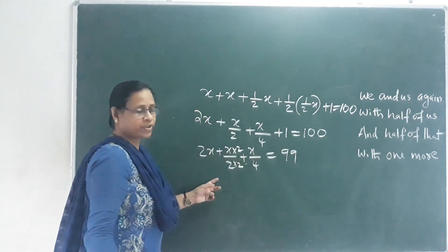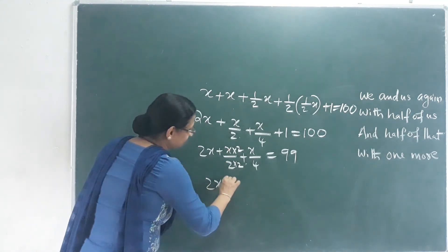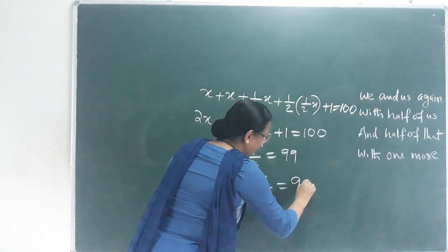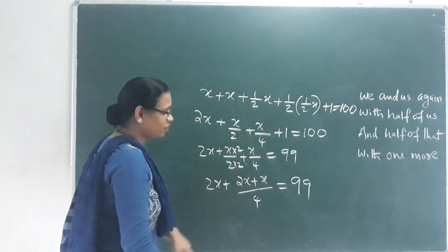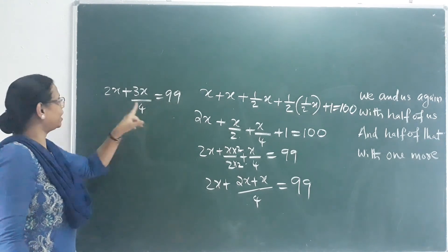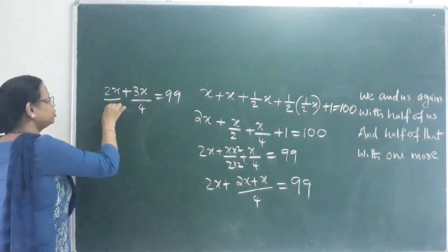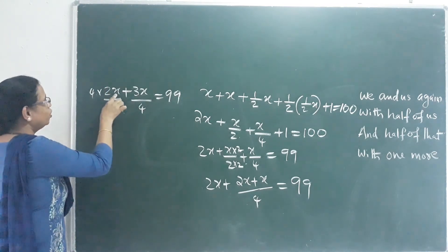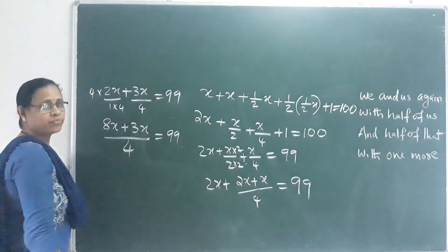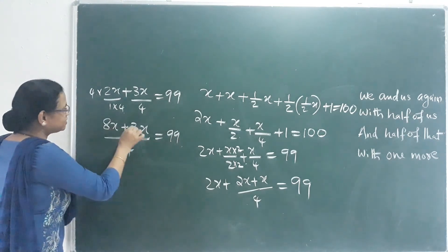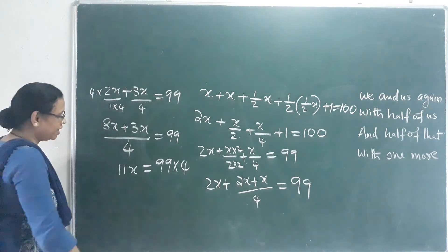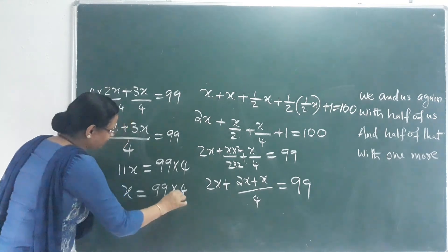Making the denominator the same — the common denominator is 4. So 8x by 4 plus 2x by 4 plus x by 4 equals 99. The numerators give 8x plus 2x plus x equals 11x. So 11x by 4 equals 99. Then x equals 99 into 4 by 11. Cutting 99 and 11: 9 times. Then x equals 9 into 4, which is 36.